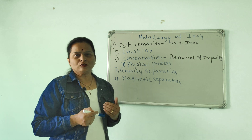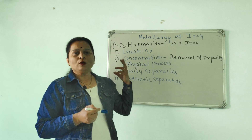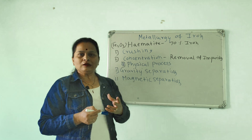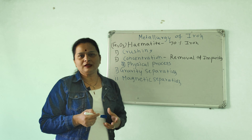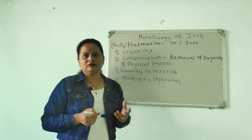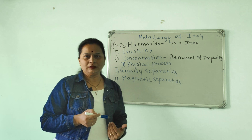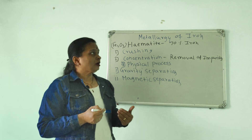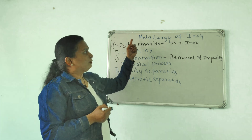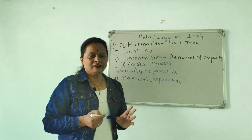Metallurgy is the flow chart. The ore is extracted from metal, then the metal is extracted from other parts. That is what we have done. So, we will start with metallurgy of iron.